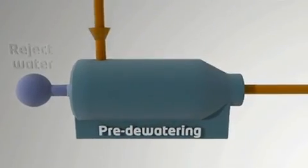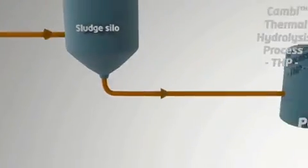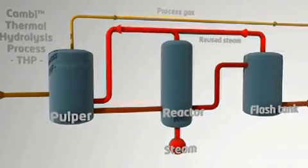The sludge is then pre-dewatered. The storage silo serves as a buffer before the organic material is fed continuously to the cambithermal hydrolysis process.